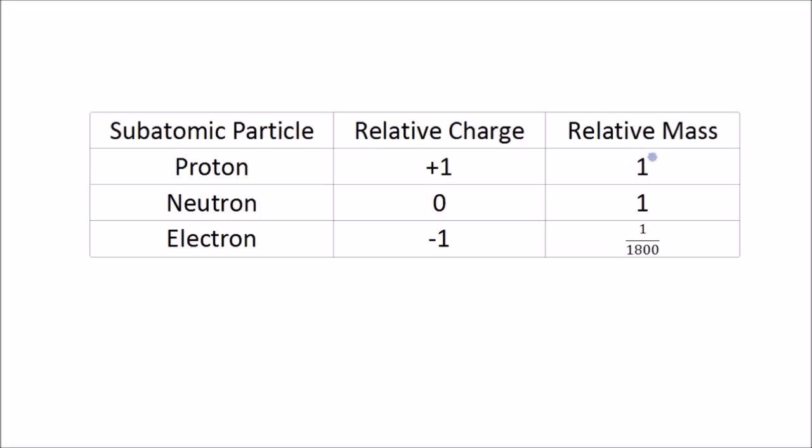And then we have relative mass. Protons and neutrons are the same size, so they have a relative mass of 1 and 1. Electrons, on the other hand, have much, much less mass.